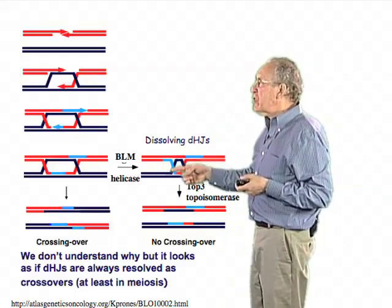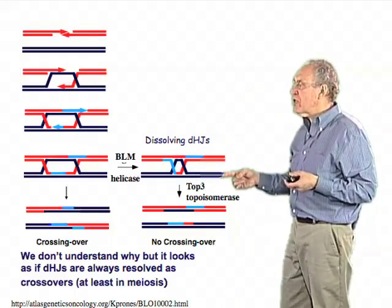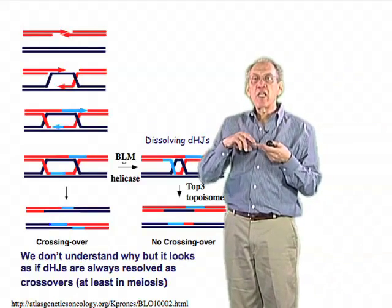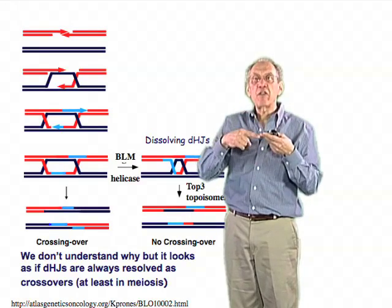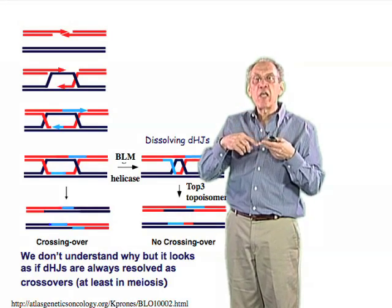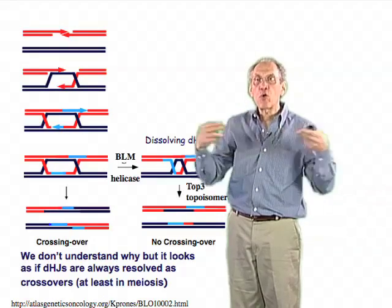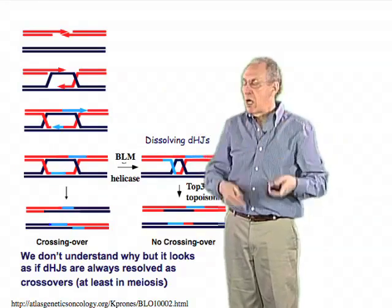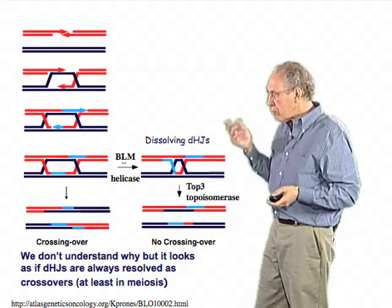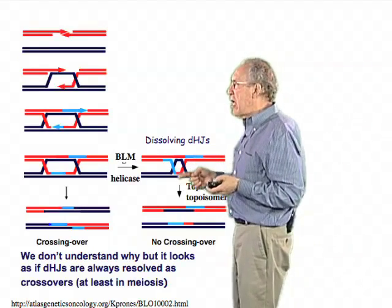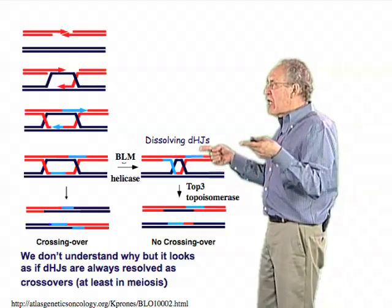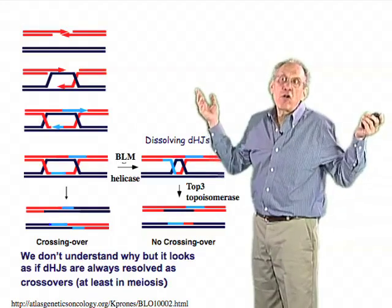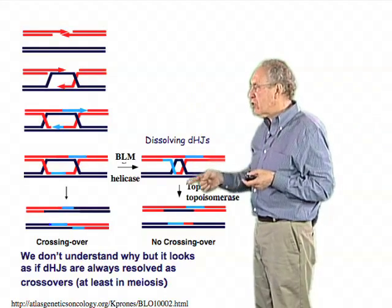The Bloom's helicase turns out to be associated with a topoisomerase — an enzyme that can nick one strand of DNA and rotate the DNA around the remaining strand — taking up the extra supercoiling that is happening as the Bloom's protein pushes these junctions toward each other. The combined action of the Bloom's helicase and the topoisomerase allows these junctions to come closer and closer together until essentially there are no more double Holliday junctions.